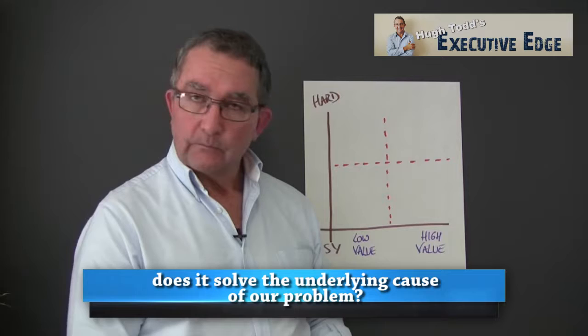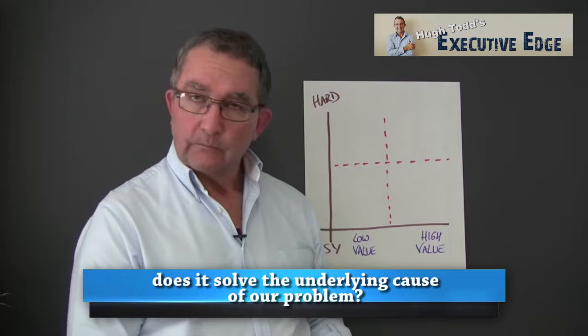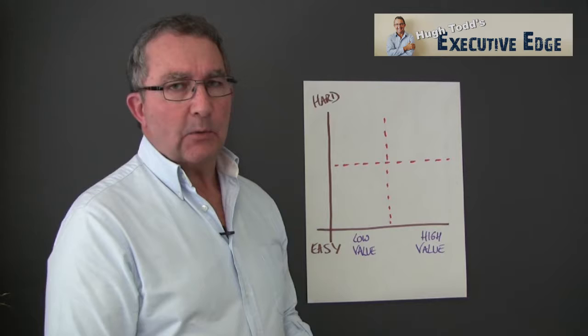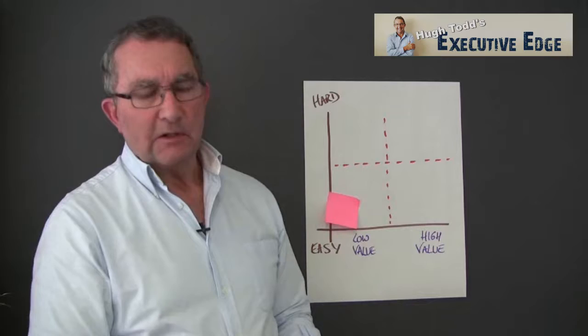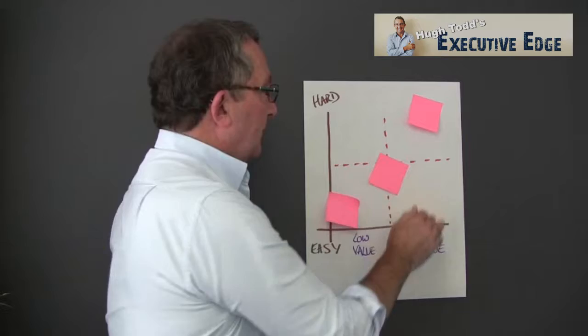Now from this, if you've got everybody's ideas on post-it notes, you can very quickly review. Idea number one: that's easy, but it's not going to add a lot of value. Idea number two: it's going to add a lot of value, but it's going to be really hard to make that happen. Idea number three: somewhere in the middle.